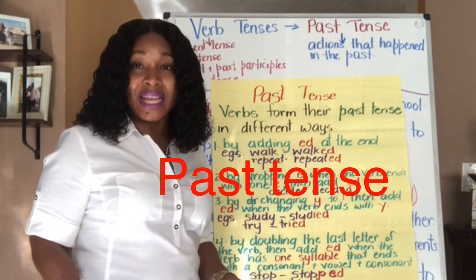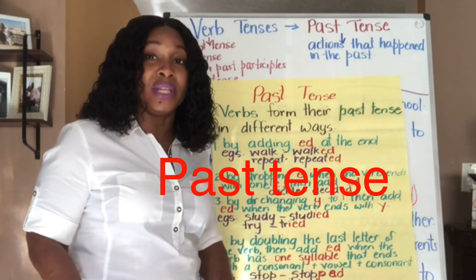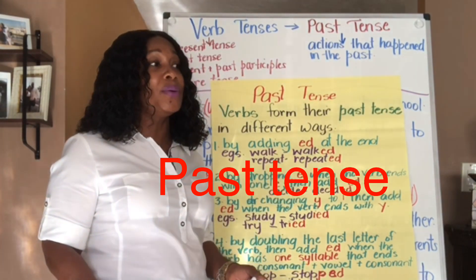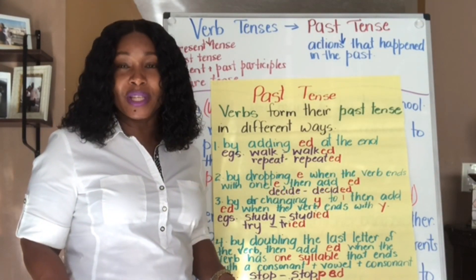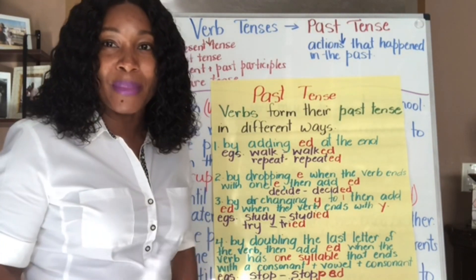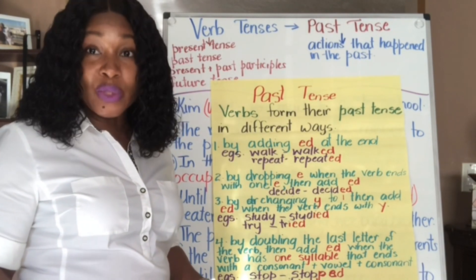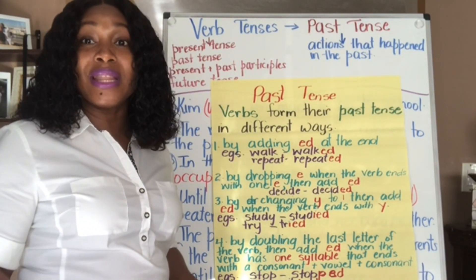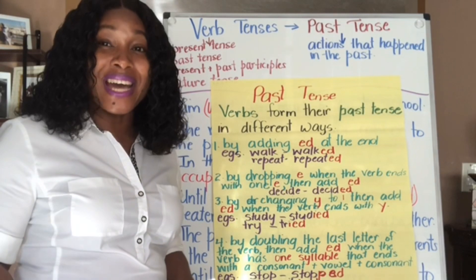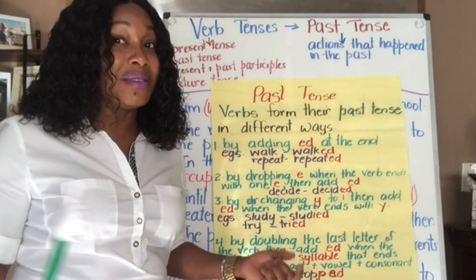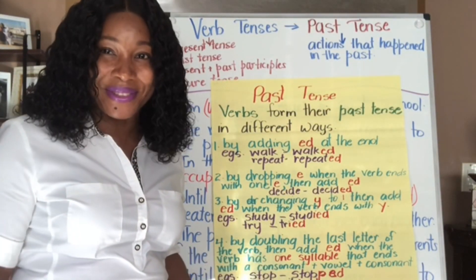Past tense refers to an action that already happened — it happened in the past. There are several ways to form past tenses of verbs. Today we'll look at some of them, and in our next lesson we'll look at others. The ones we're looking at today are those that we add ED to. However, there are different words we add ED to, and for some we don't just add ED directly, but ED is included.